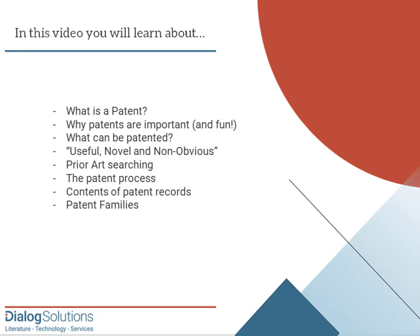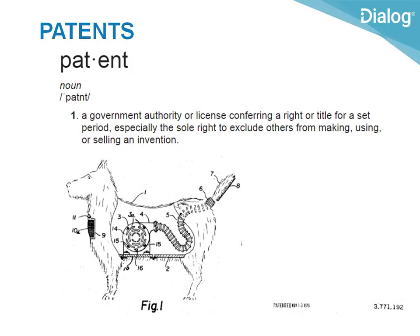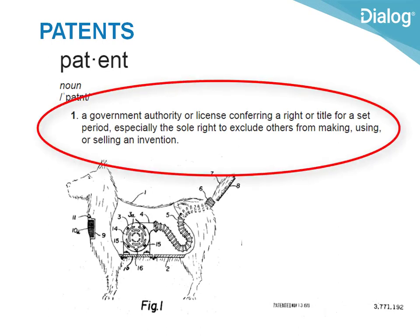So let's get started. Here is one definition of a patent, from the US Patent and Trademark Office. A patent is a government license for a limited period of time, and it gives the patent owner the right to keep others from making, selling, or using the invention. After all, you can invent something and sell it without getting a patent. The purpose of getting a patent is to keep other people from using your idea.